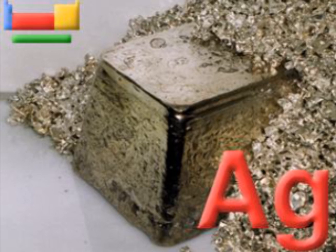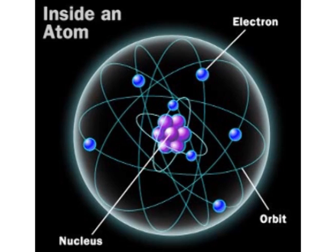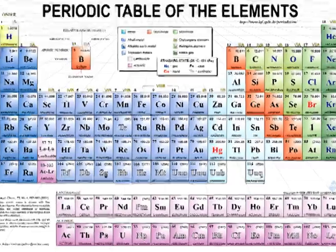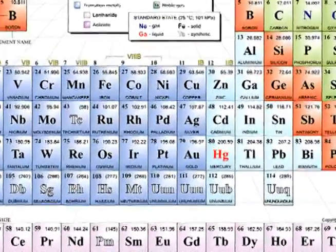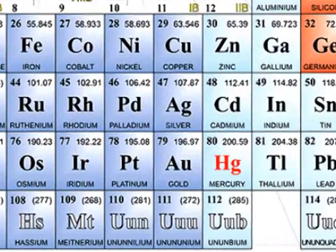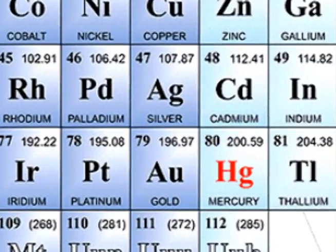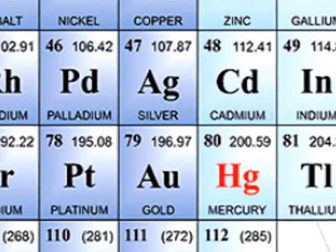Silver is an element. Elements are the fundamental materials of which all matter is composed. All matter on a planet can be broken down to the basic elements. A chemical element is a pure chemical substance consisting of one type of atom, distinguished by its atomic number — the number of protons in its nucleus.